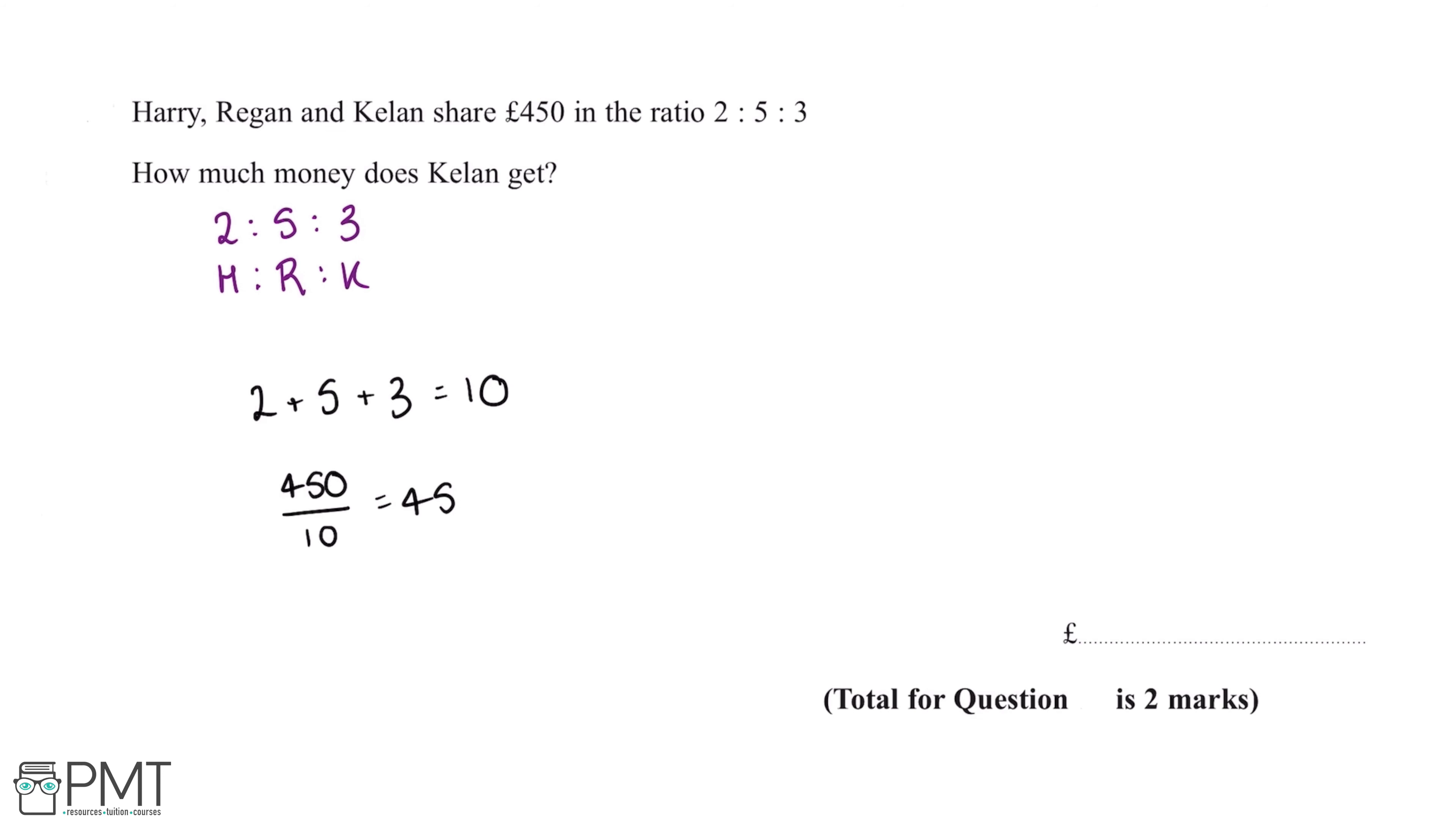Now this gives you one of your two marking points, and in order to get the final mark we need to multiply this 45 by 3, which is the ratio of money that Keelan will get. 45 times by 3 is £135, so this means Keelan will get £135.